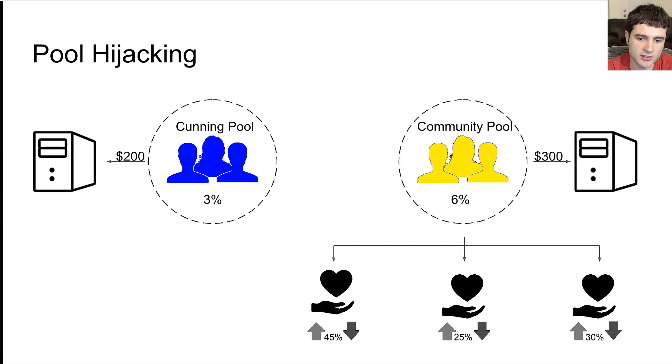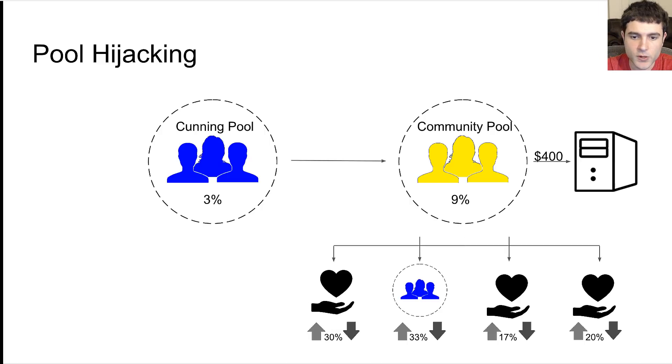Cunning pool, on the other hand, is a for-profit pool or community pool or otherwise. All they care about is making money. They own 3% of the network, and because they own a smaller percent, they pay a smaller server fee, maybe like $200 a month or something. Cunning pool is tired of this $200 per month fee. They'd rather get rid of it somehow.